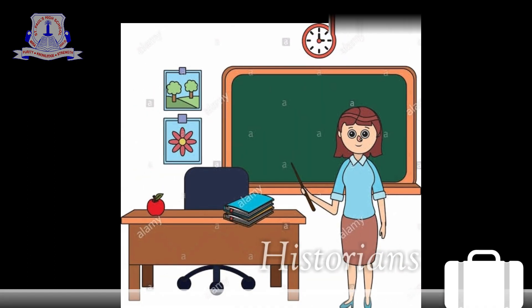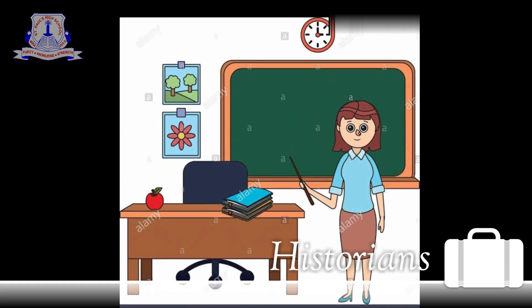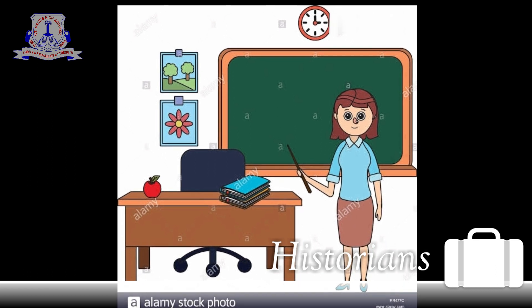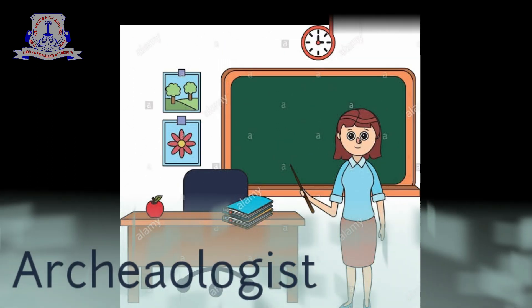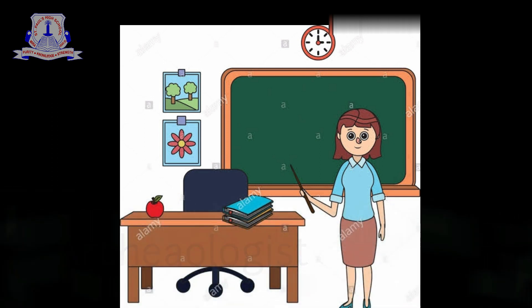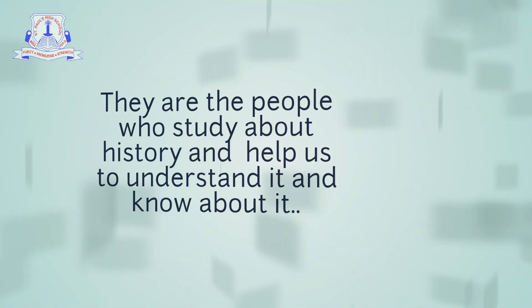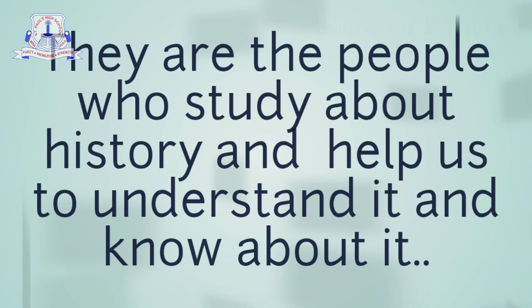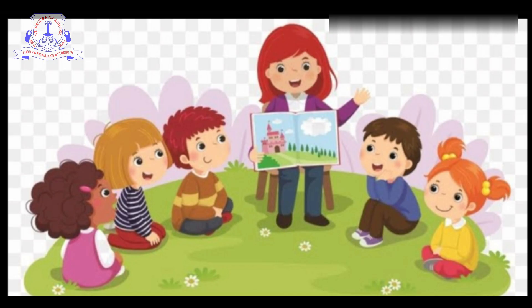Students, also remember there are two types of people — historians and archaeologists. They are the people who study history and help us to understand it and know about it. Now let us look at what changes history brings about by looking at the pictures placed in front of you.